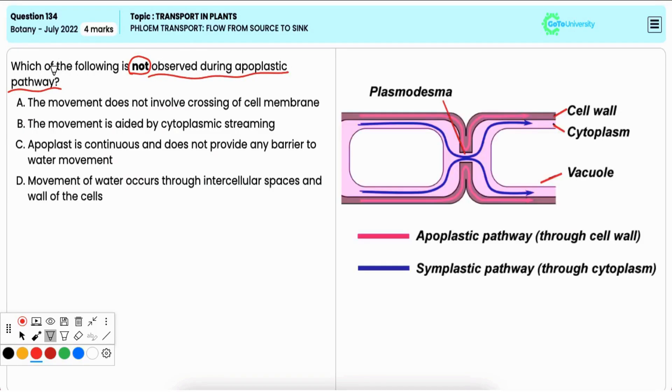Option A: The movement does not involve crossing of cell membrane. This is true. Option B: The movement is aided by cytoplasmic streaming. This is not true for the apoplastic pathway, which involves the movement of water through the cell walls and intercellular spaces.